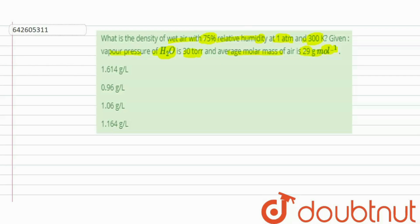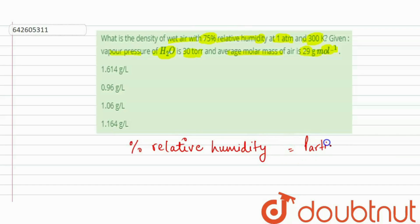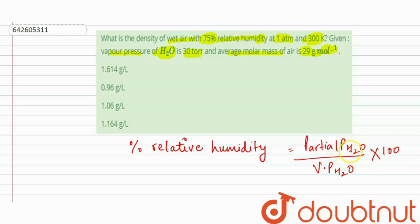First, let's look at what relative humidity percentage is. Relative humidity equals the partial pressure of water divided by the vapor pressure of water, multiplied by 100. From here, we can find the value for partial pressure, and then calculate the density of wet air.